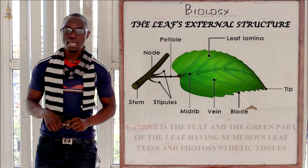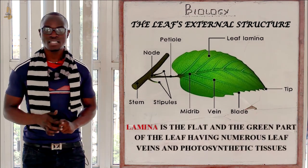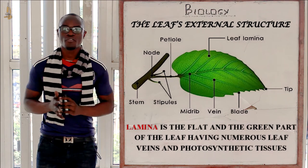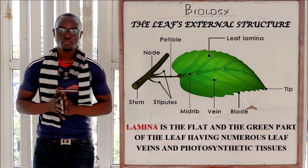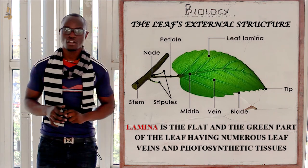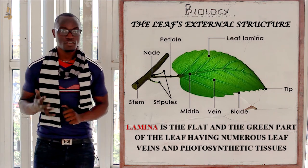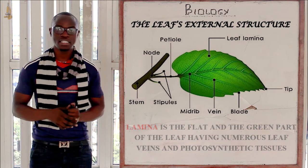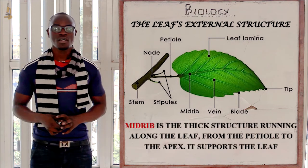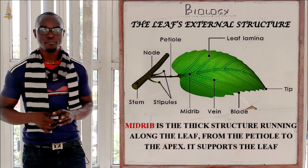So what is the lamina? This is the flat and green part of the leaf. It mainly contains chlorophyll or the photosynthetic tissue.